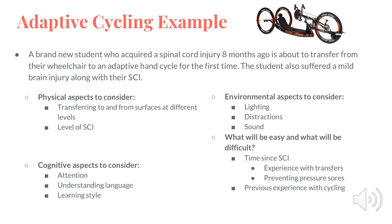This last example to drive this concept home is an adaptive cycling one. A brand new student who acquired a spinal cord injury eight months ago is about to transfer from their wheelchair to an adaptive hand cycle for the first time. The student also suffered a mild brain injury along with their spinal cord injury. Some physical aspects to consider: this is a fairly recent spinal cord injury, so transferring to and from surfaces at different levels may not be something this person has done before. The firmness of the surface they're going to can make things trickier as well. Something to also consider is the level of their spinal cord injury.